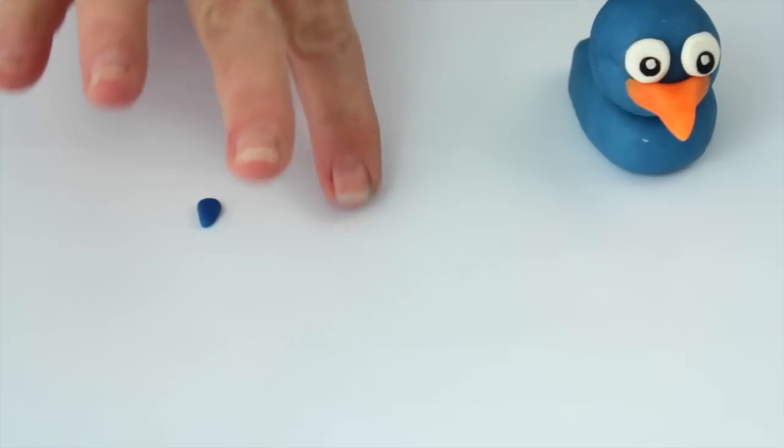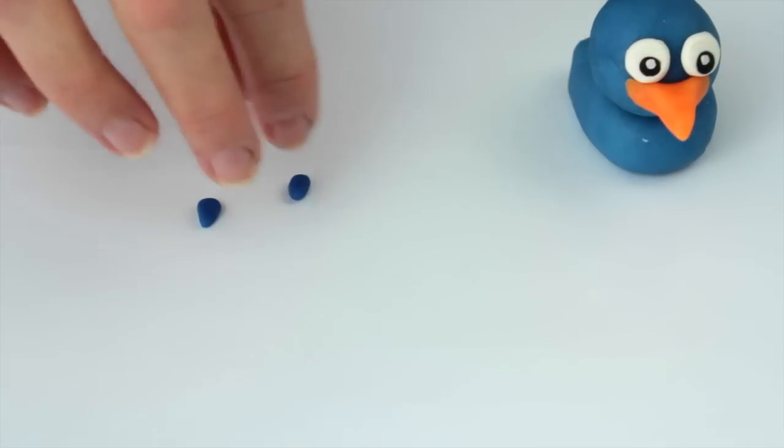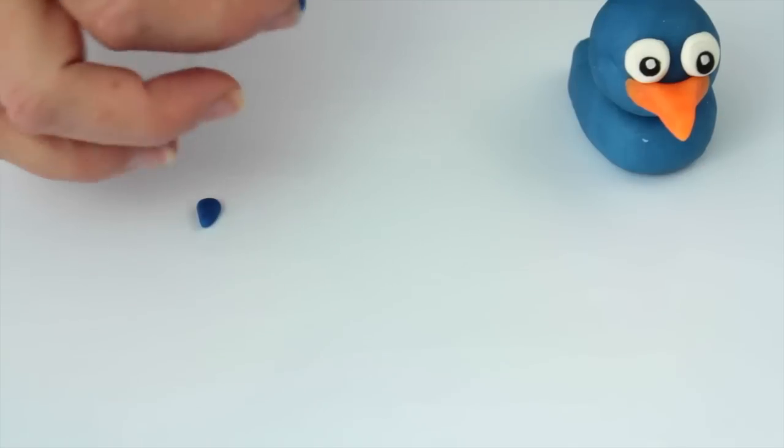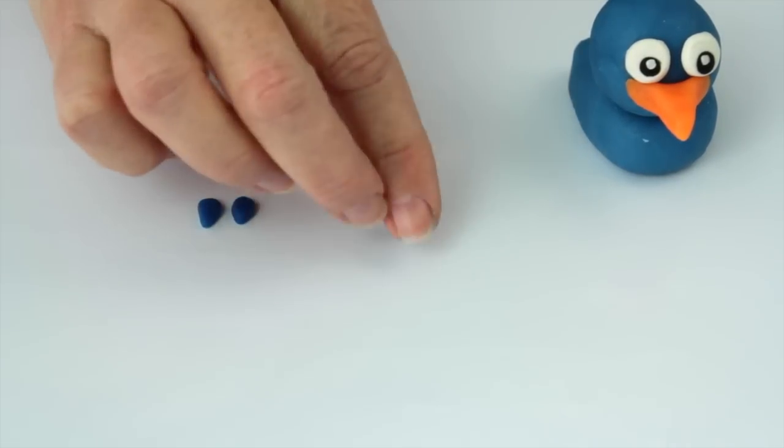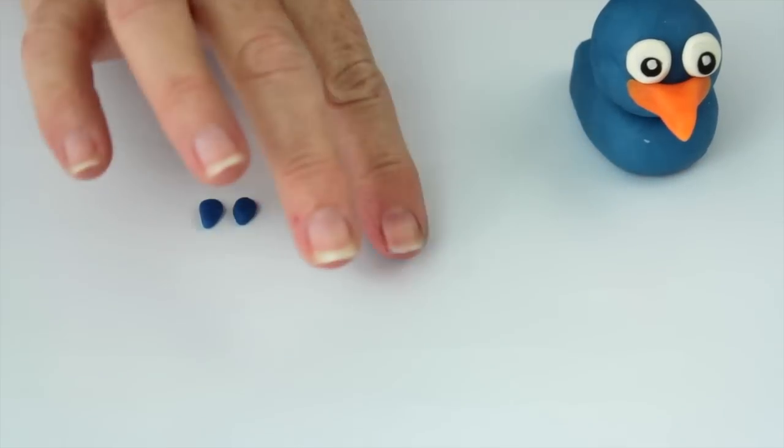To make the crest on top of the head, roll three small balls of play-doh. Make each one by rolling them into a cylindrical shape and squeezing the bottom of the cylinder to make a teardrop shape. Lightly flatten them with your finger.